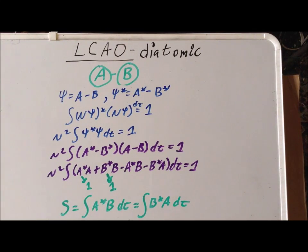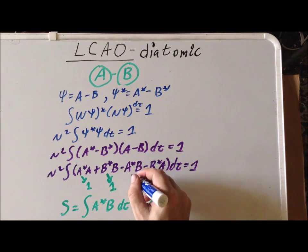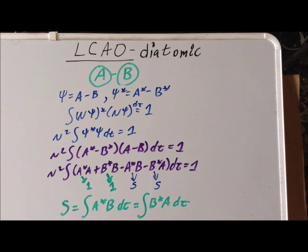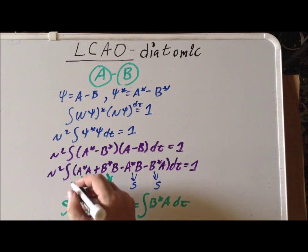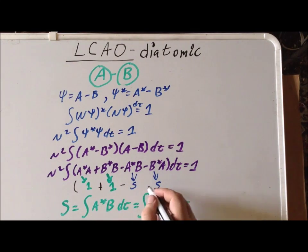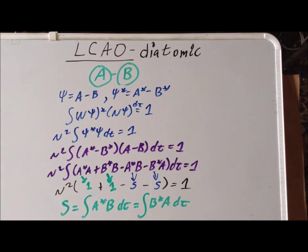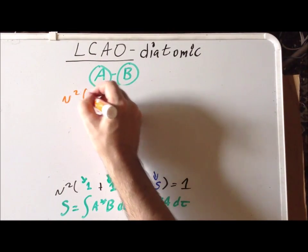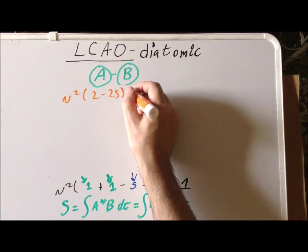Now with that definition, we realize that the a-star·b portion is equal to the overlap integral S, as well as b-star·a is equal to S. So inside the integral, we have that 1 plus 1 minus S minus S, times N-squared, is equal to 1.